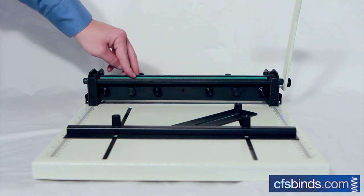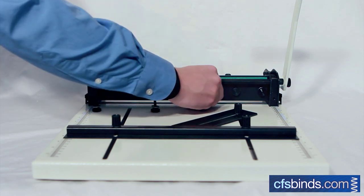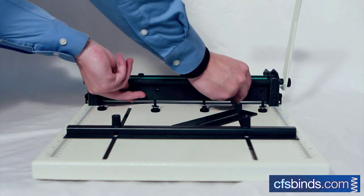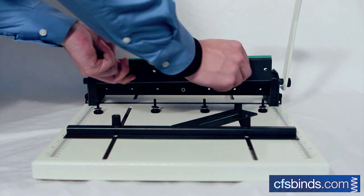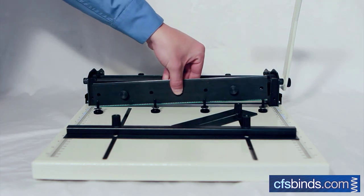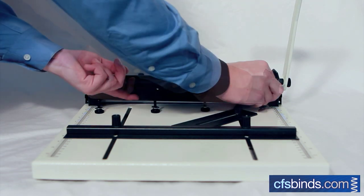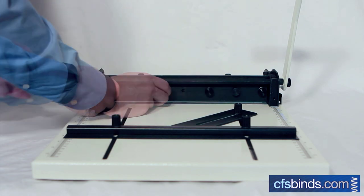Identify the perf blade. Unscrew the thumb bolts on the blade and pull the blade out and rotate so the perf blade is facing down. Re-insert the thumb bolts to lock the blade in place.